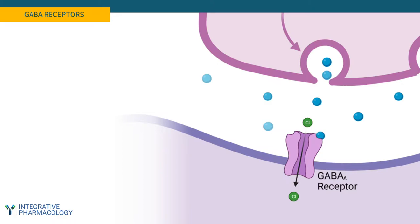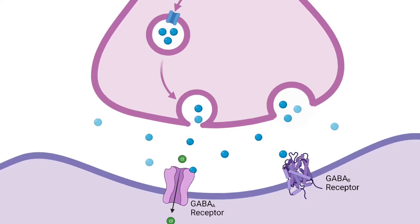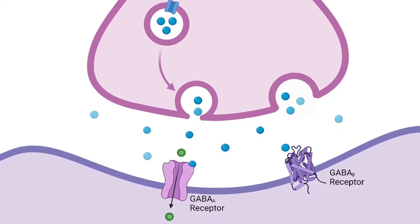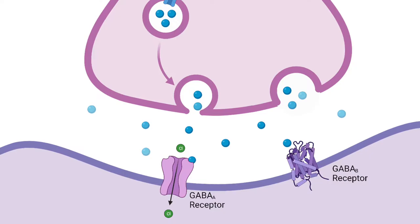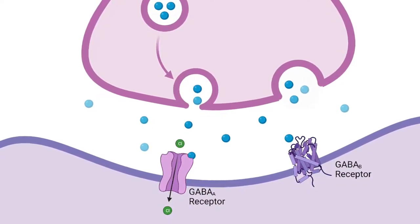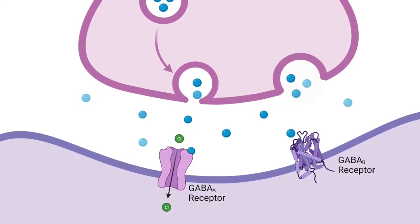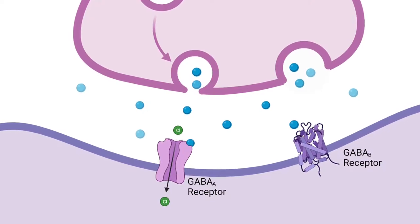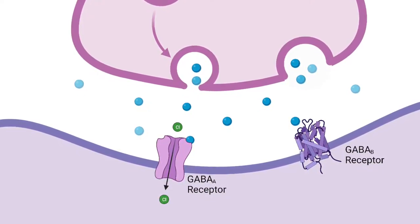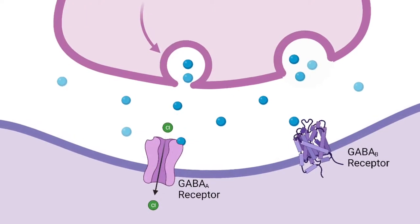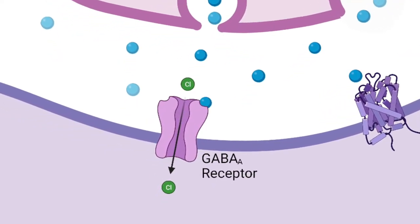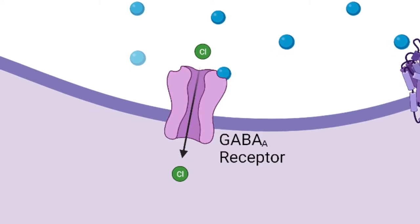Once GABA is in the synaptic cleft, it can bind to its receptors. There are two types of GABA receptors. The major type is an ion channel — a chloride channel, shown on the left, that allows chloride ions to flow into the cell. The other type is a G-protein coupled receptor, the GABA-B receptor. Its medical relevance is relatively insignificant compared to the GABA-A receptor, which is the chloride channel. When chloride flows into the cell, this relaxes the postsynaptic cell — it's an inhibitory event that prevents further activation of that cell.